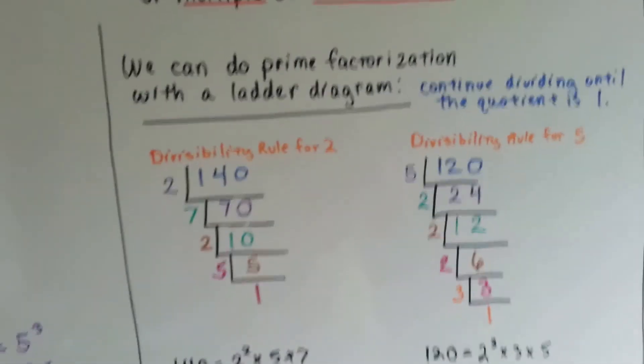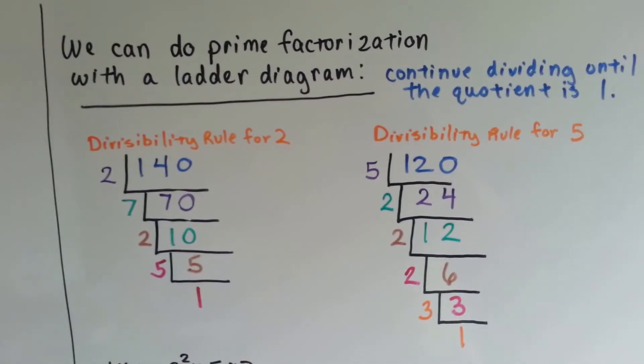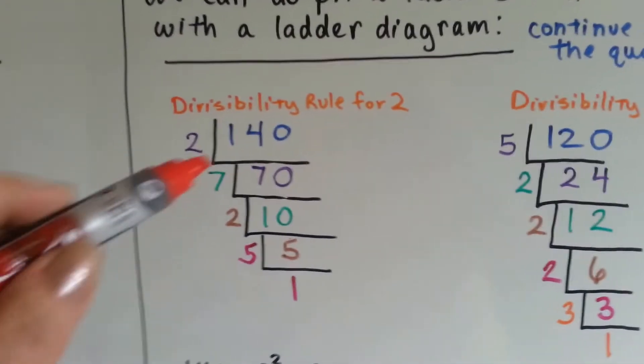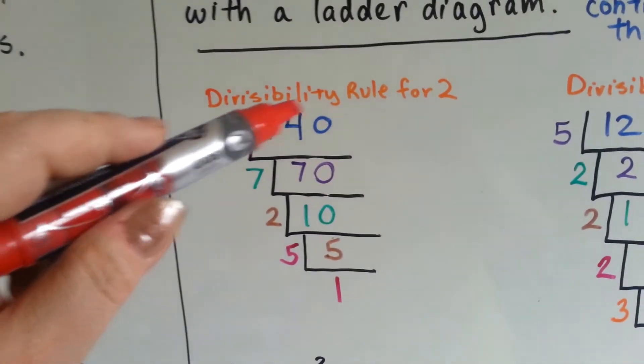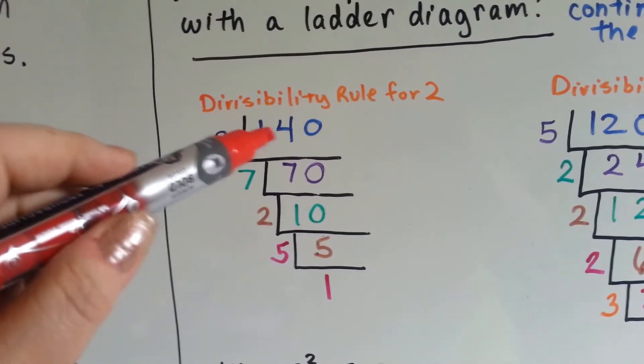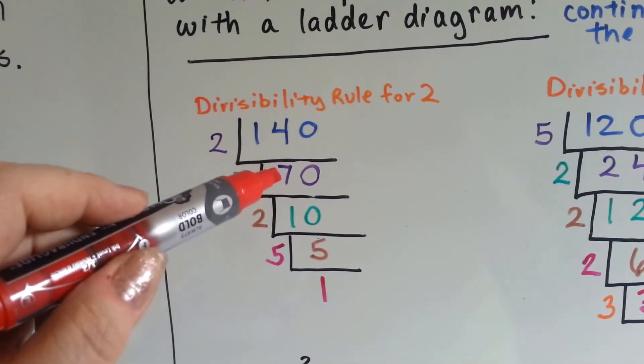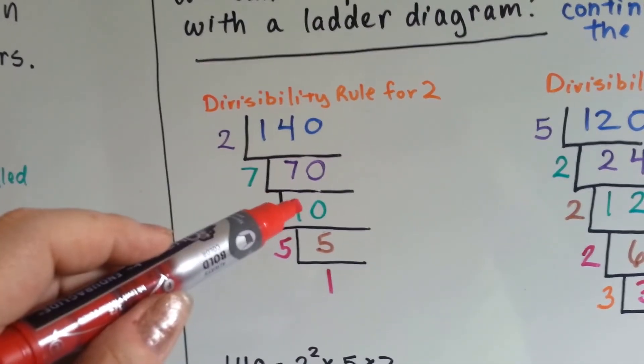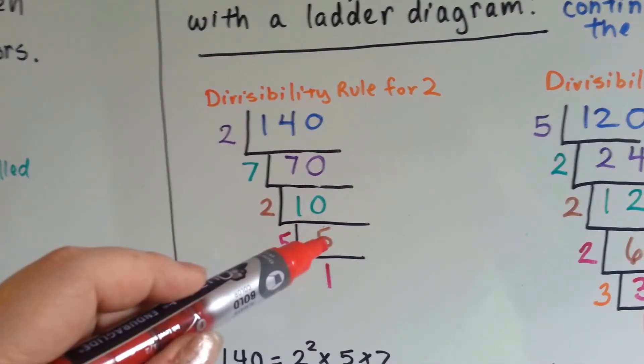We can do prime factorization with a ladder diagram. You just continue dividing down until the quotient is 1. For 140, we can use the divisibility rule for 2. 140 divided by 2 is 70. Then we can use 7. 70 divided by 7 is 10. Then we've got to break up 10. That's 2 times 5.